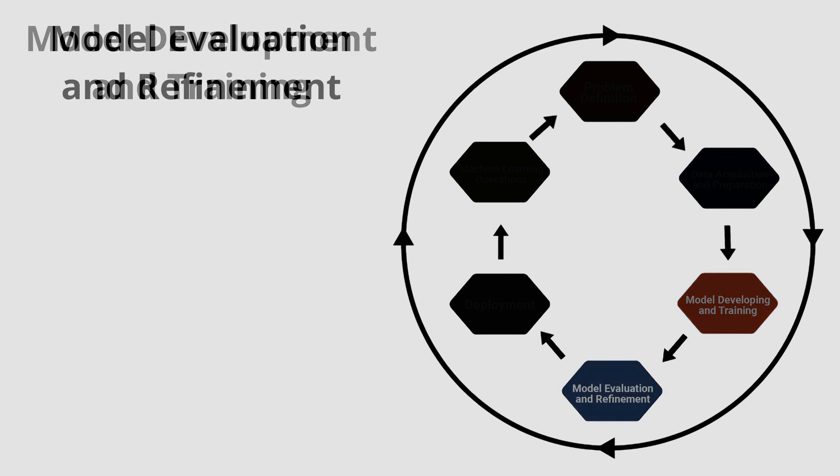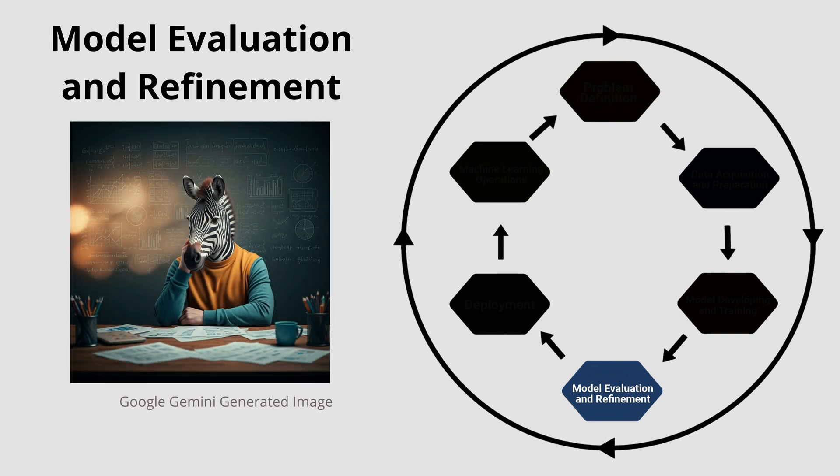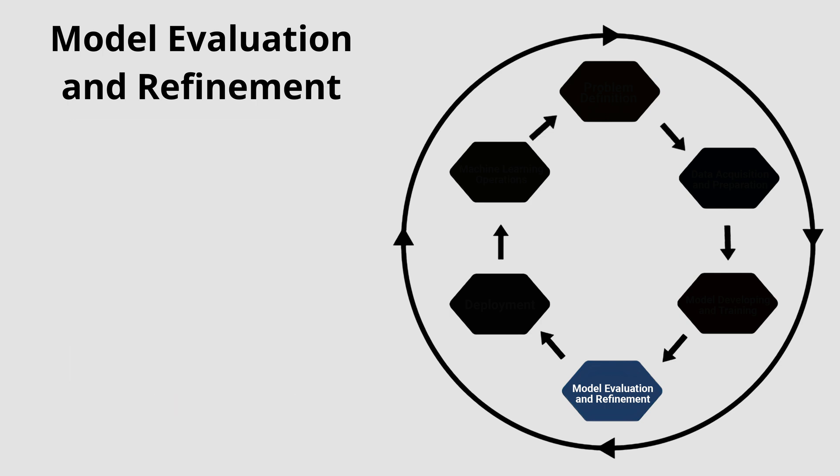The fourth phase is model evaluation and refinement. Once the model has been trained, evaluate it to see how well it performs. This involves testing the model on unseen data and analyzing its predictions. If the model's performance is not satisfactory, refine and tweak it. This can mean adjusting the model's parameters, changing the model's architecture, or returning to the data acquisition phase to gather additional data.